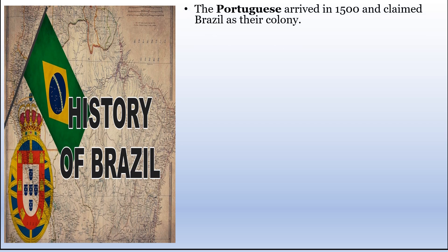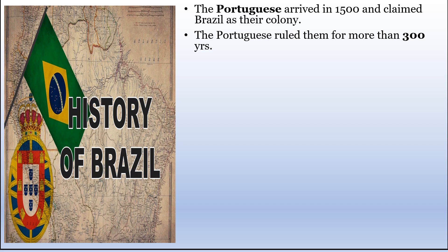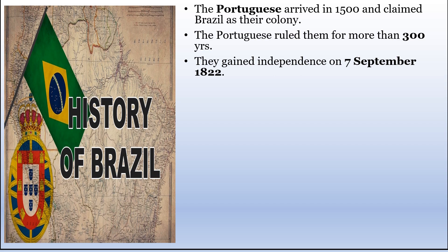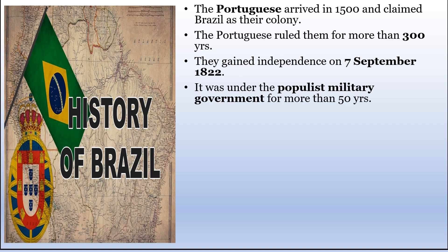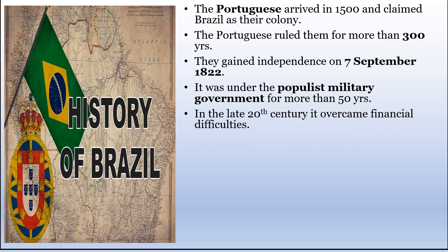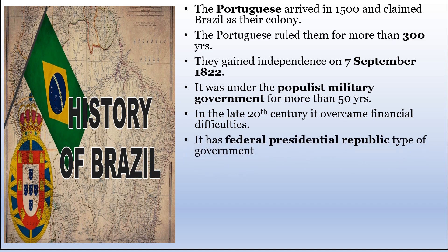We will now study the historical background of Brazil. The Portuguese arrived in 1500 and claimed Brazil as their colony. The Portuguese ruled them for more than 300 years. Brazil gained independence on 7th September in the year 1822. It was under military rule for more than 50 years after independence. In the late 20th century, it overcame financial difficulties and started developing economically. It has a federal presidential republic type of government — a multi-party federal republic with two legislative houses — and the head of state and government is the president.